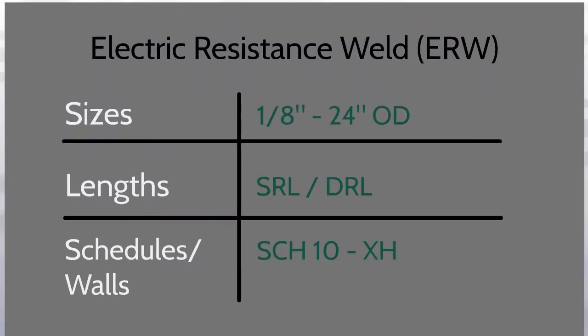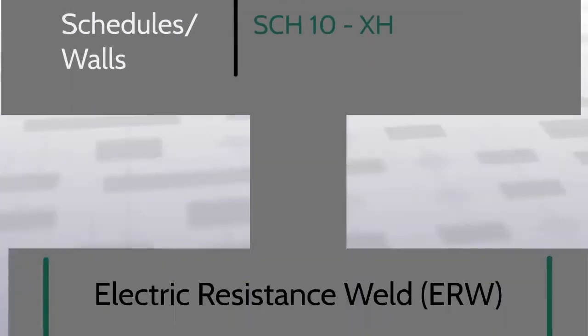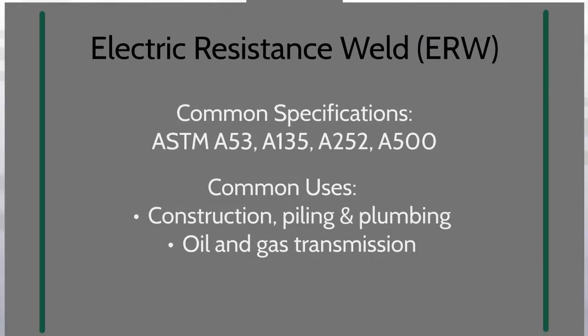Here we can find what defines ERW pipe. Common specifications for electric resistance weld pipe include ASTM A53, A135, A252, and A500. Common uses for ERW pipe include construction, piling, plumbing, and oil and gas transmission.